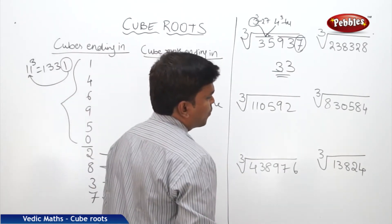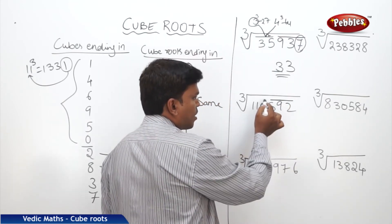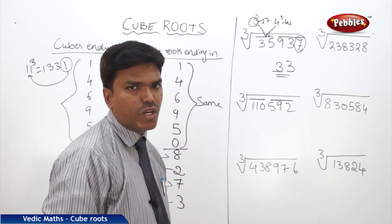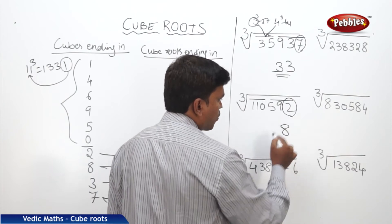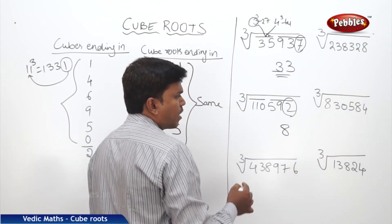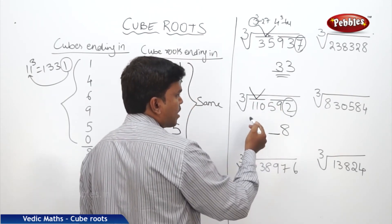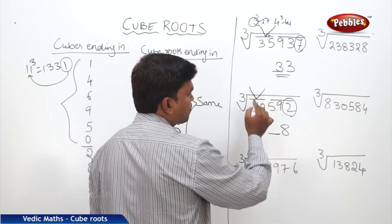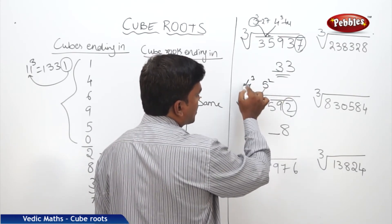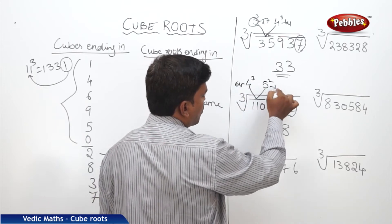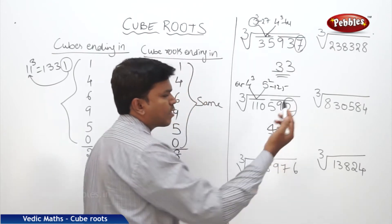Now one more example. Make the partition into 3-digit groups. The cube number is ending in 2, so the cube root should end in 8 only. Now for the second partition, 110 comes between 4 cubed (64) and 5 cubed (125). We always take the lesser number, which is 4. So the answer is 48.